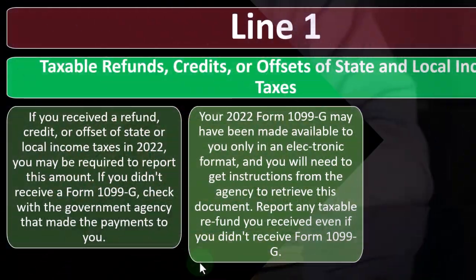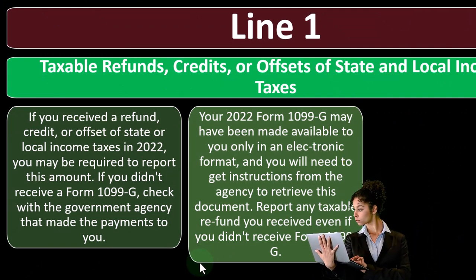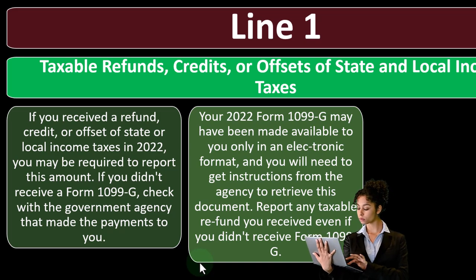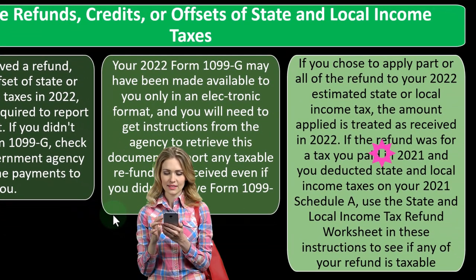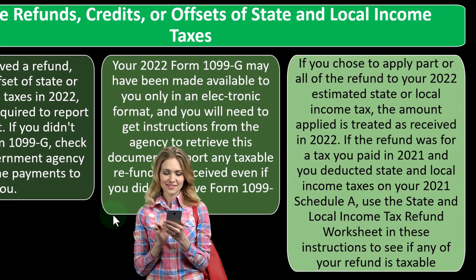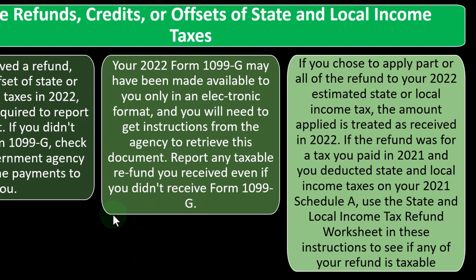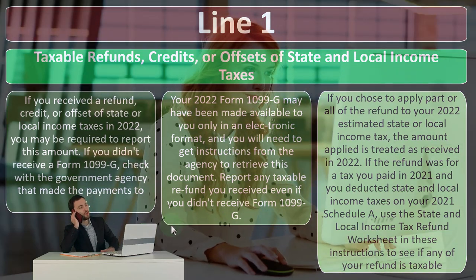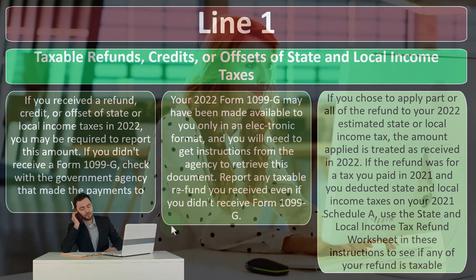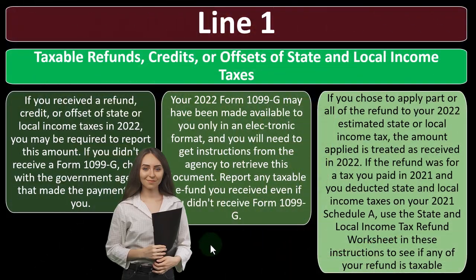Your 2022 Form 1099-G may have been made available only in electronic format, and you'll need instructions from the agency to retrieve it. Report any taxable refund you received even if you don't receive a Form 1099-G — like all 1099s, if you have income and didn't get the document, you should still record it. If you put something different on your form than what the IRS has, it's going to cause problems.